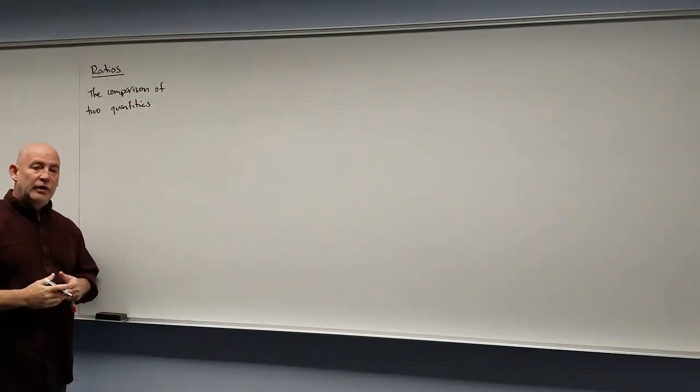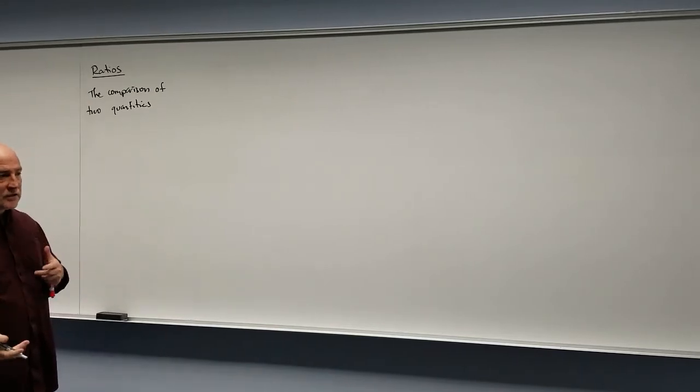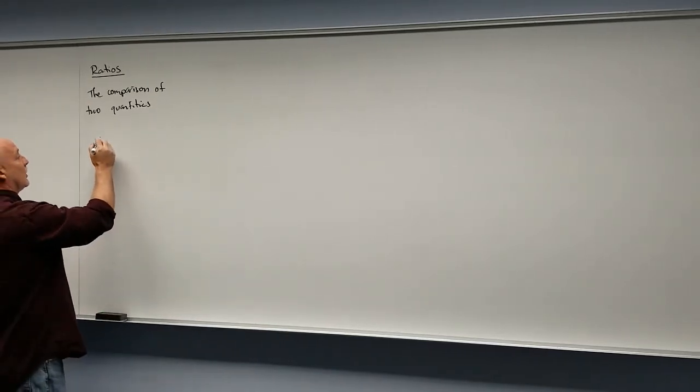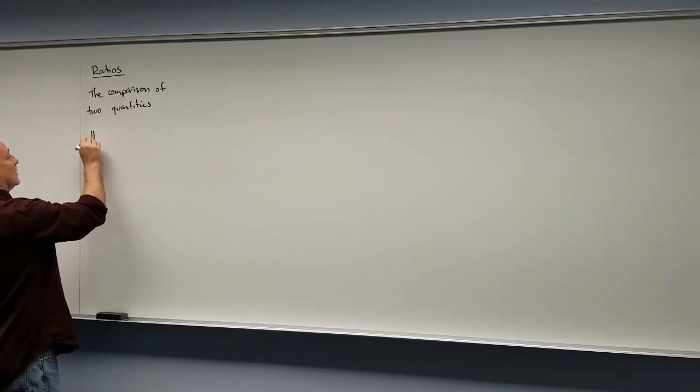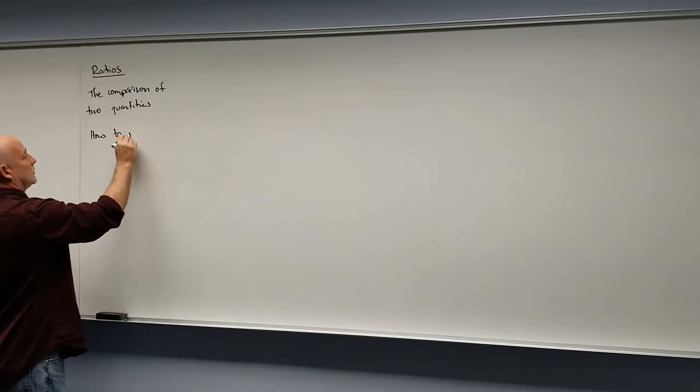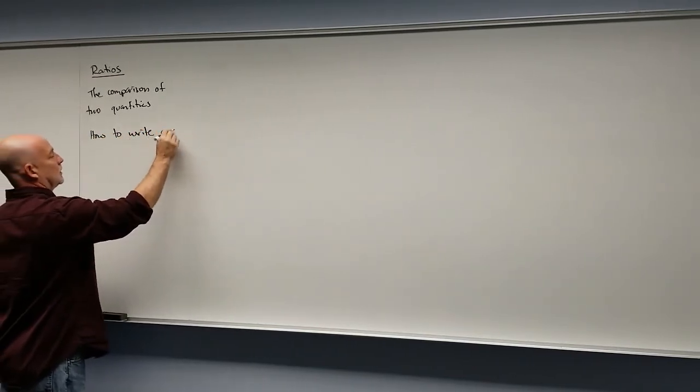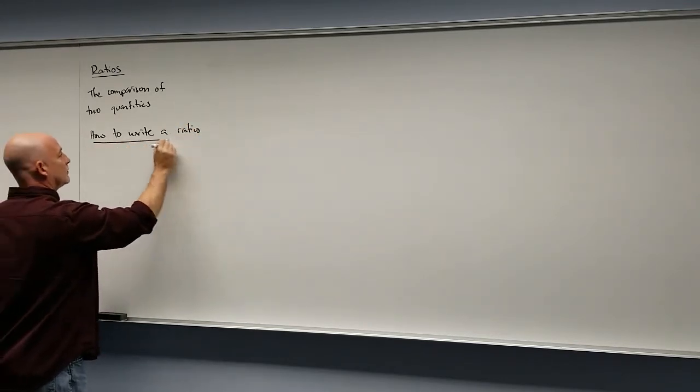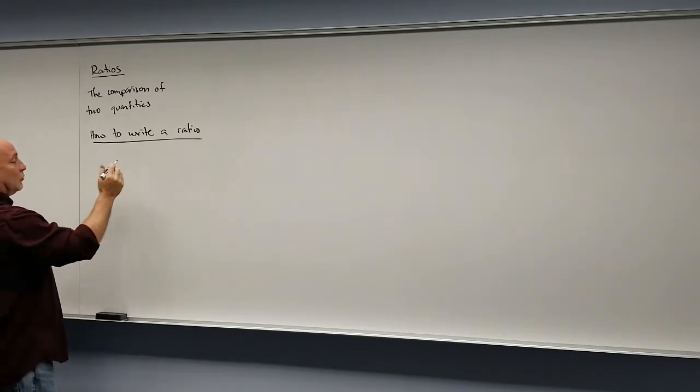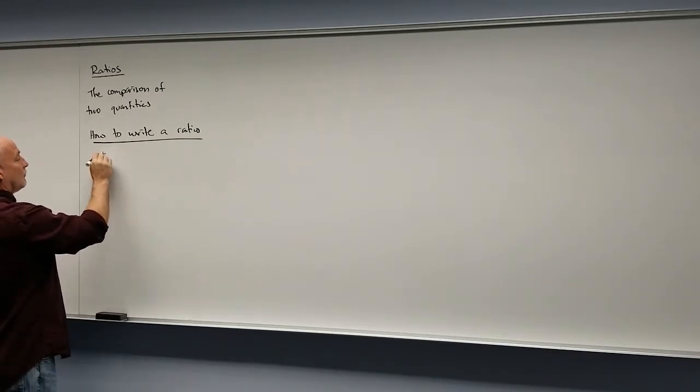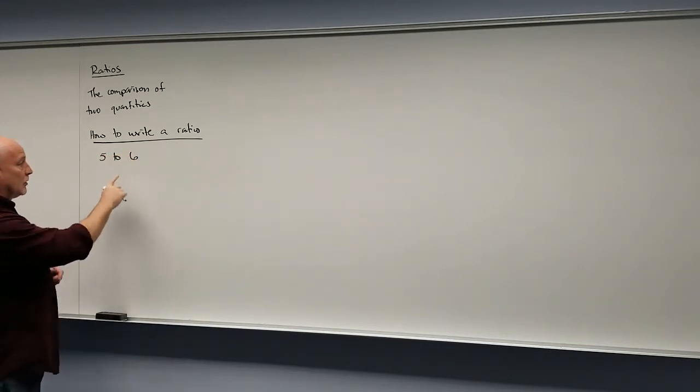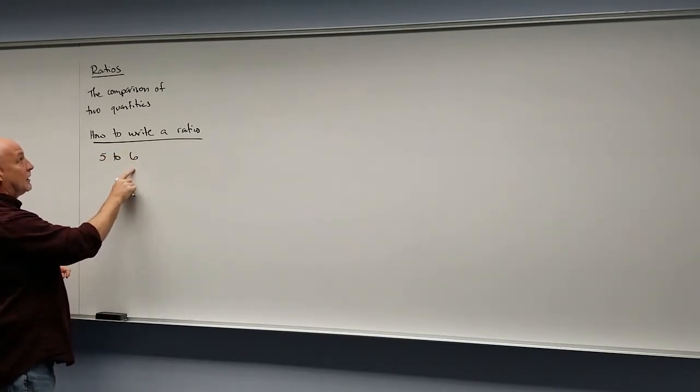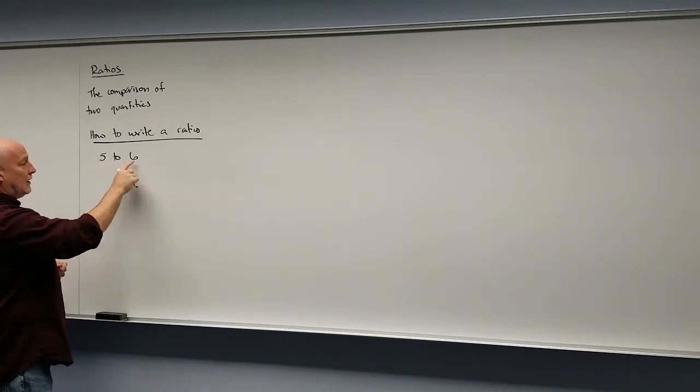Now we generally represent this ratio as a fraction, but there's actually a couple ways that we can show a ratio. There's three ways. We could write it in words, so you can say five to six. Using the word 'to' shows you how you're comparing the two. You're comparing five to a six.